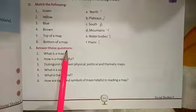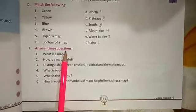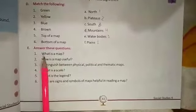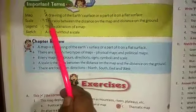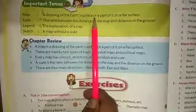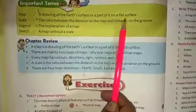Now come to the last question answer. E. Answer these questions. 1. What is a map? The answer is in the page number 60. A map is a drawing of earth's surface or a part of it on a flat surface.